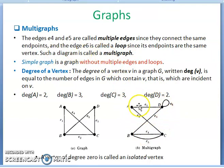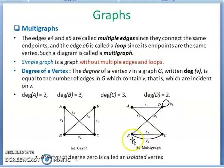Simple graph. A simple graph is a graph without multiple edges and loops — without any multiple edges and loops. That graph is called a simple graph.